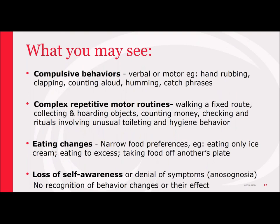Compulsive behaviors could be motor things like hand rubbing or clapping, or verbal behaviors that become repetitive — counting aloud or humming. These are usually evident in the mid stages of the disease but potentially early on too. Some folks develop complex motor routines they repeat over and over — walking a fixed route, collecting or hoarding objects, or obsessively counting money. Narrow food preferences are common, as is a loss of self-awareness. Anosognosia refers to this loss of the ability to monitor one's own behavior and not be aware of the changes that others become increasingly aware of.